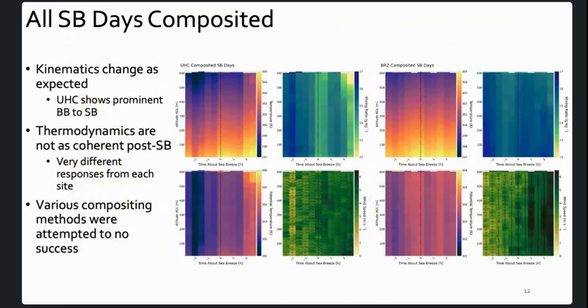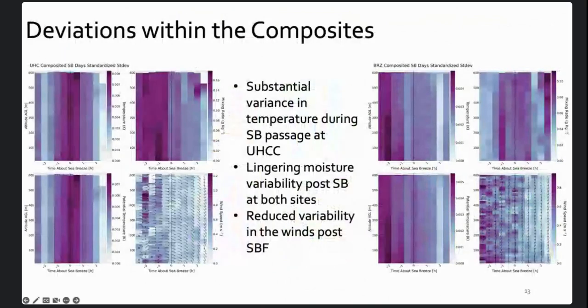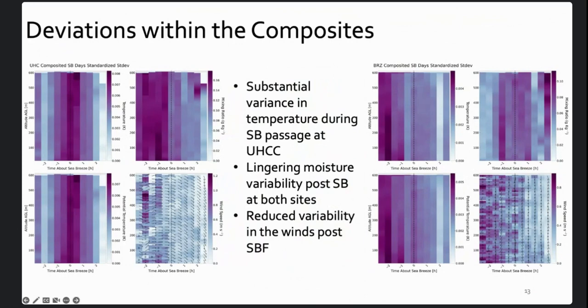So when we wanted to try to look at what all of these cases have in common, what their patterns are, compositing them by their locations to see if there are any clear differences, kind of just got a lot of washed out results, except for in the kinematics. The kinematics are showing what we expect. At UHC, which is the one closer to Galveston Bay, we do see this bay breeze to sea breeze transition. Moisture, not really seeing what we are not telling us what we want to hear. And then at the other location, similarly, we see the sea breeze move onshore, and there is a little bit more moistening, but temperatures kind of all over the place. And that's just because there are a lot of deviations within this data set. The only thing that actually decreases in its standard deviation, this is standardized by the way, is wind speed. The kinematics are reliable, but the thermodynamics are not.